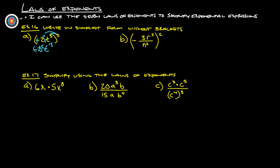Write in simplest form without brackets — we can multiply that out. Negative 2 times 2 is 4, times 2 more is 8, times 2 more is 16, times 2 more is 32. So 2 to the 5th power is 32. With 5 negatives, each pair cancels out, leaving one negative. So it's negative 32t to the 15th.